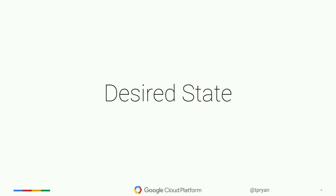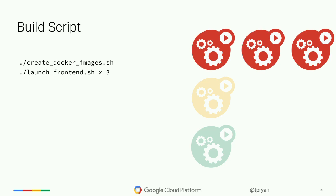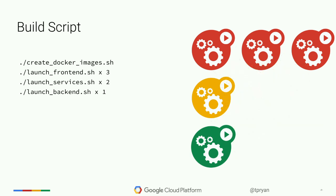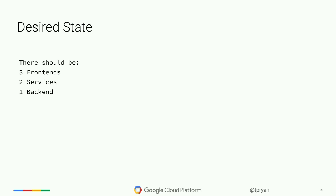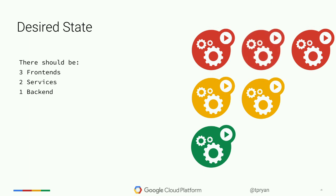The next concept is desired state — declarative as opposed to imperative. Imperative is a build script: create your Docker images, launch three front ends, launch two service layers, launch one persistence backend. If something happens and one machine blows up, someone has to intervene. Declarative says 'there should be three front ends, two services, and one backend' — you don't do them sequentially. Kubernetes makes them happen, and if one blows up, it automatically starts another to restore the desired count.